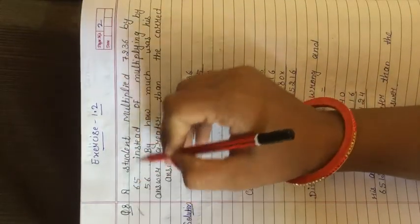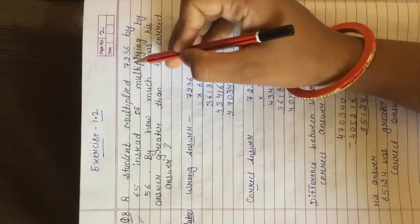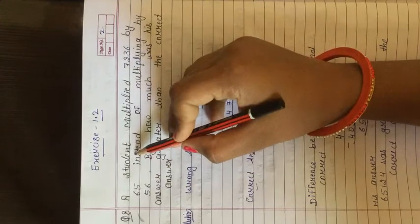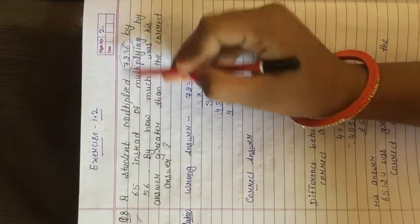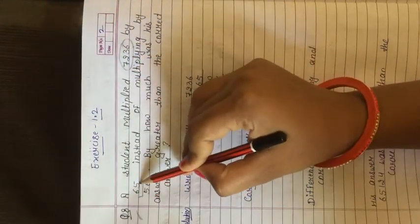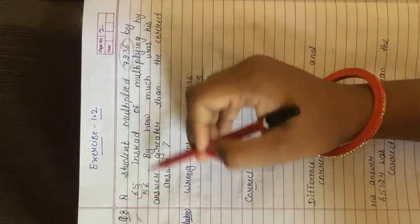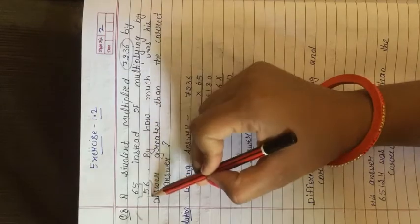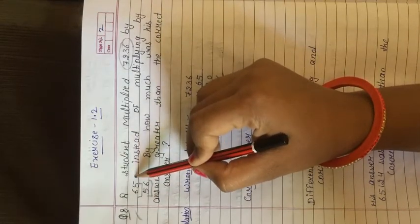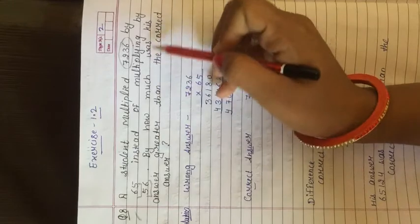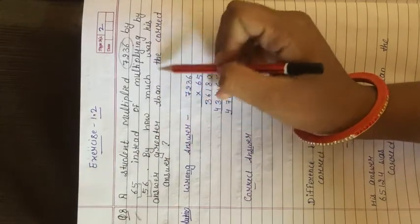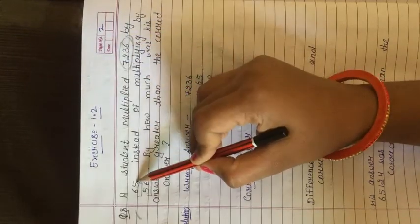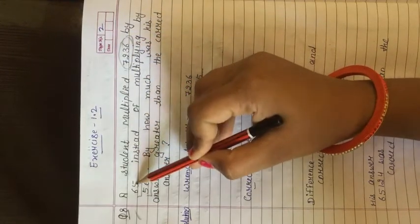Now coming to question number 8. A student multiplied 7,236 by 65 instead of multiplying by 56. By how much was his answer greater than the correct answer? His answer will be wrong because he should have multiplied by 56 but multiplied by 65.